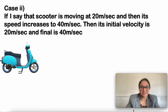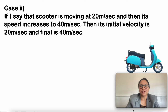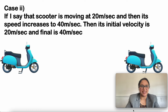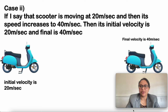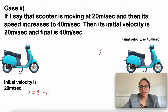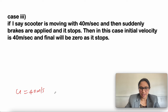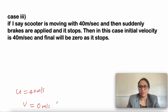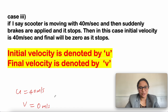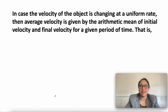Case 3: suppose the scooter is moving at 40 m/s and suddenly brakes are applied, bringing it to a stop. Here the initial velocity is 40 m/s and the final velocity is 0 m/s.